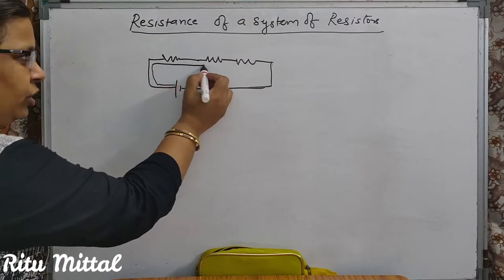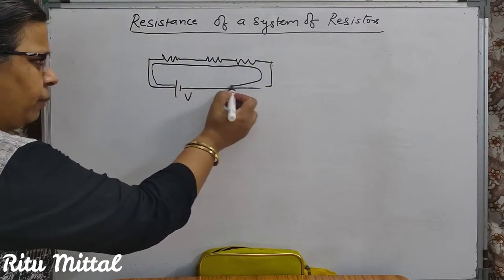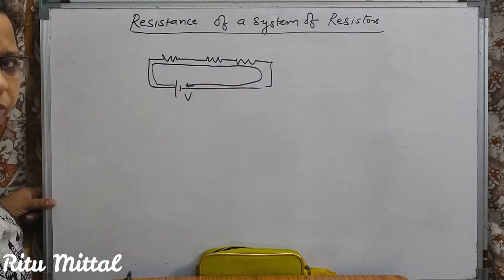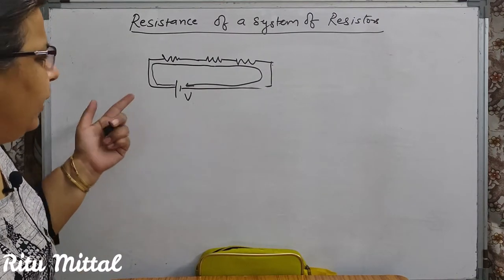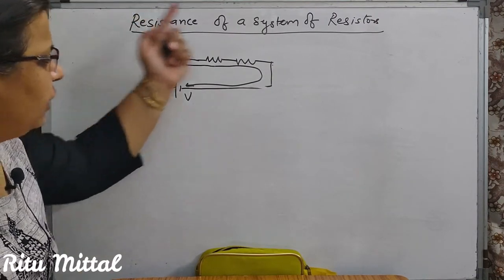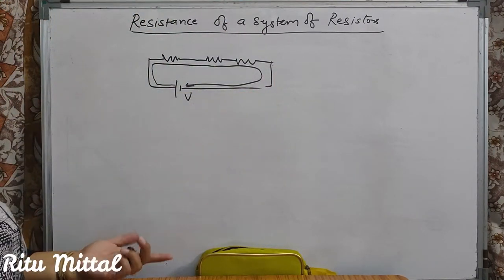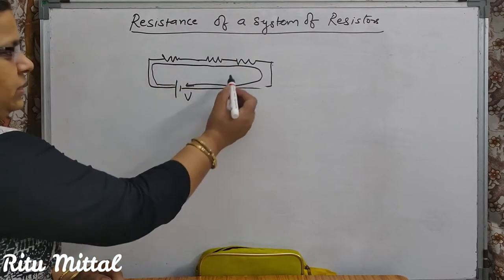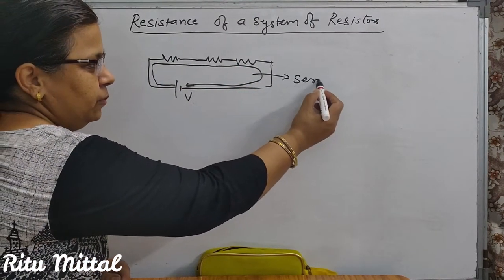The current is going to divide — which current is going here, the current is going to go back, because it's a closed circuit. When current is not going to divide — when one current is flowing completely — what do we call this connection? We call this a series connection.